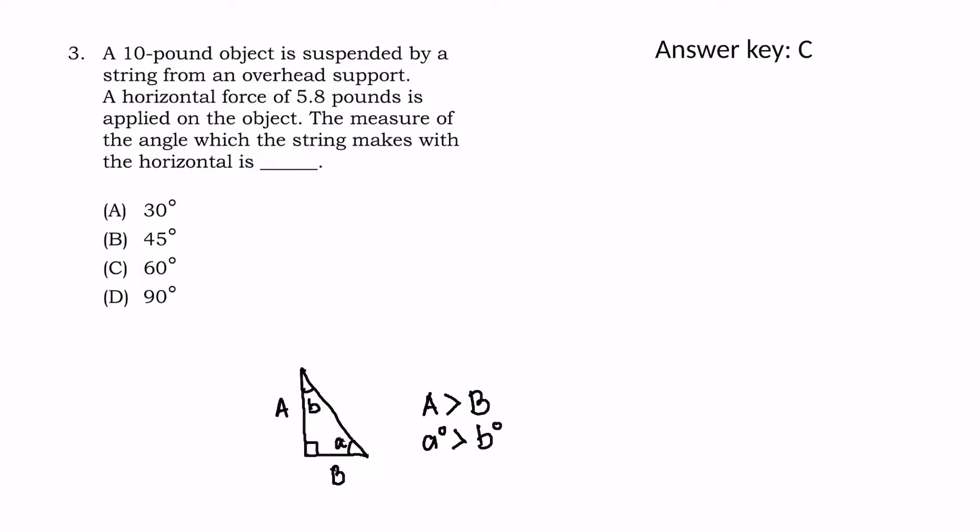If line A is greater than B, then angle A is greater than angle B. Or if line A is smaller than line B, the angle A is less than the angle B. So remember the opposite of it.